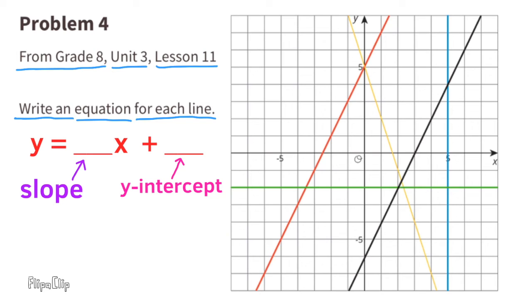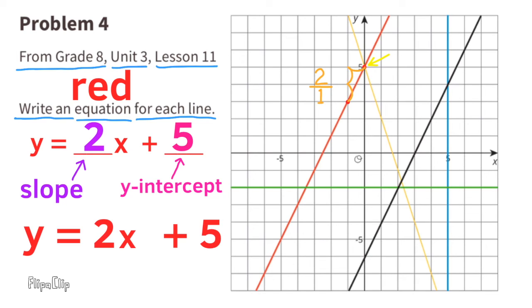Now let's take a look at the red line. The red line has a slope of up 2, so that's a positive 2, and to the right 1. So that's a slope of 2. And the y-intercept of the red line is located at 5. Now the equation reads y equals 2x plus 5.